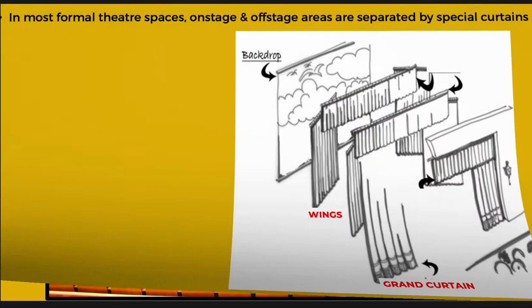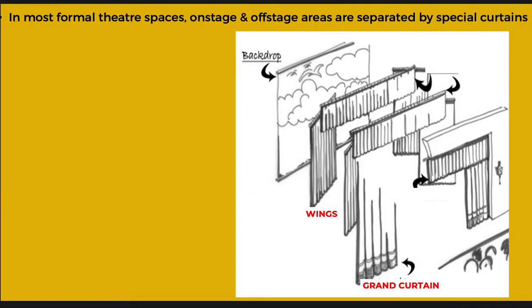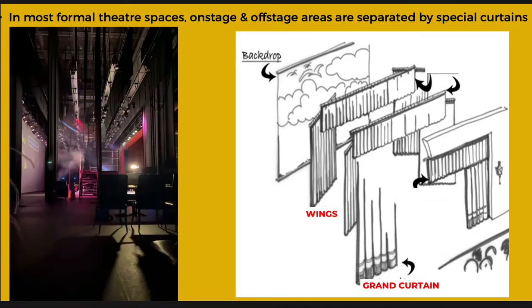Let's talk a little about the curtains and the wings. The biggest curtain is the grand curtain. Proscenium theaters can have anywhere from two to six wings depending on the size of the theater. This is a backstage, offstage view of the wings in the National Academy for the Performing Arts — you can see they have three wings here, and this is actually a pretty big stage.